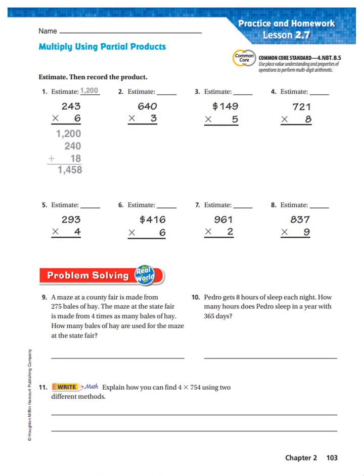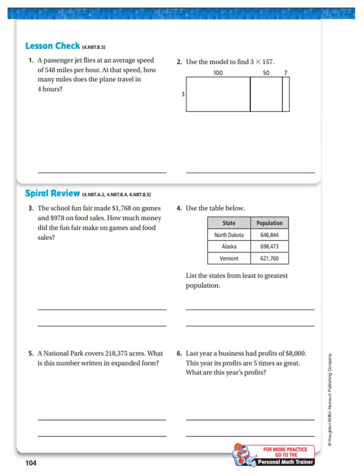Here we are with our practice and homework for lesson 2.7. I need you to do page 103. When you're finished, take a snapshot of the page. Send it to me. Remember, it is for a grade. Here is page 104. Complete page 104. Take a snapshot of it. Send it to me. It will go for a grade. Those of you who are being homeschooled without me, make sure that your parents check your work.